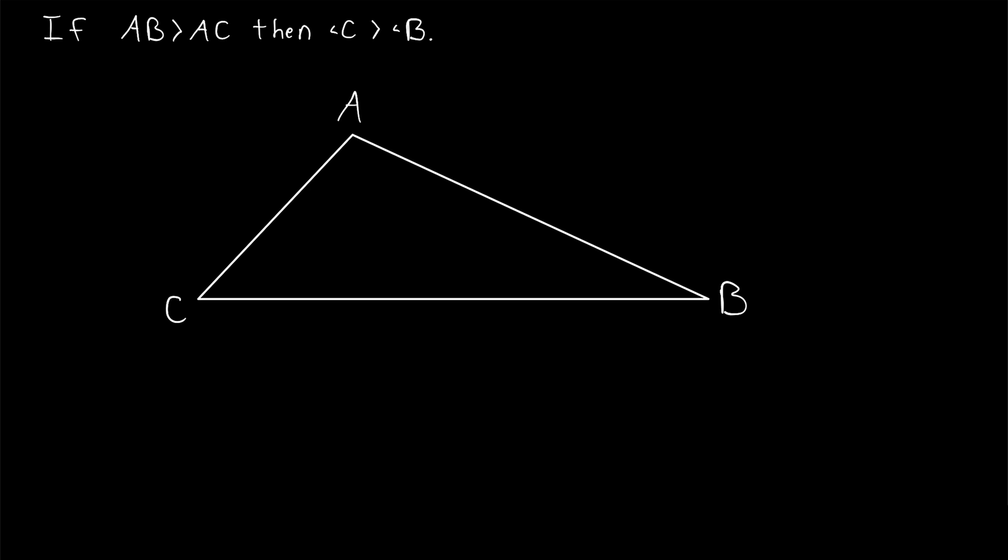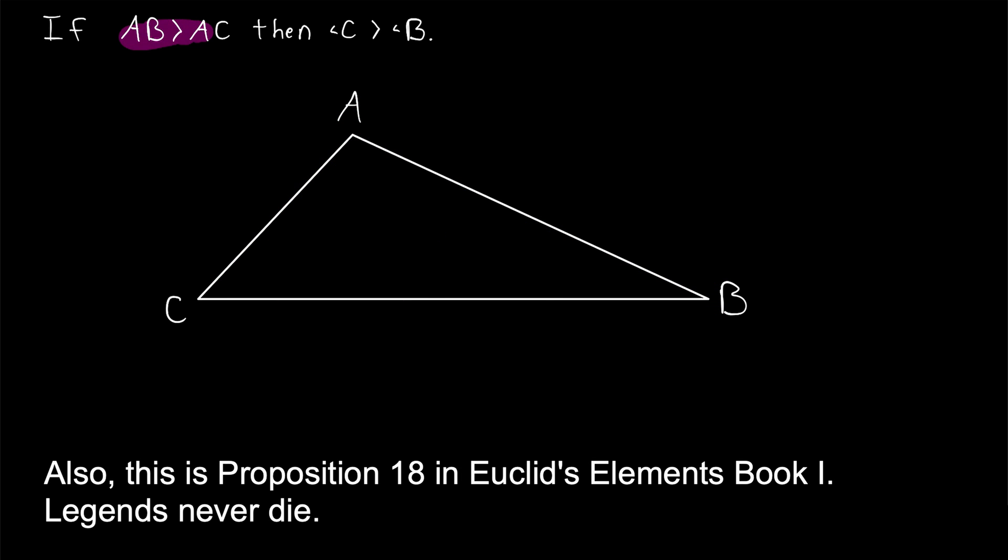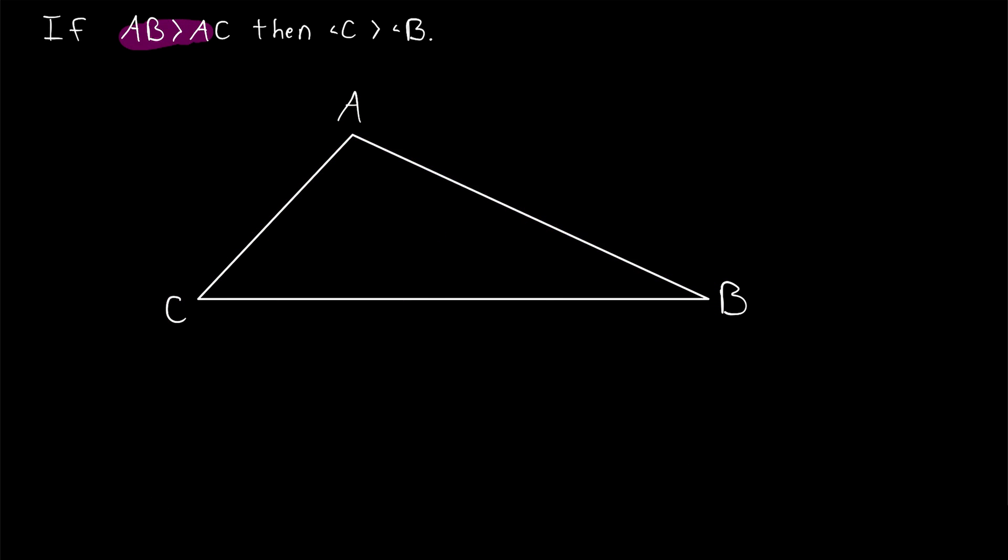So here is our arbitrary triangle with one side AB longer than the other. We're going to prove that the angle opposite the longer side is greater than the angle opposite the shorter side. And note that we're not saying AB has to be the longest side, we're just saying that it is the longer side when compared to AC.